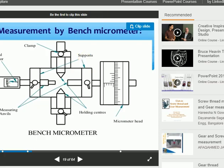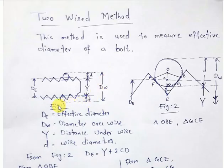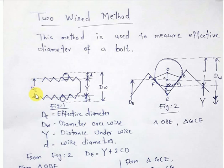This is the floating carriage micrometer. Before we move ahead, let us understand Figure 1. In Figure 1, a bolt is shown with two wires. Here, dw is the diameter of the wire, de is the effective diameter which we need to find, and y is the distance under wire — that is, the distance between the two bases of the wires being used.